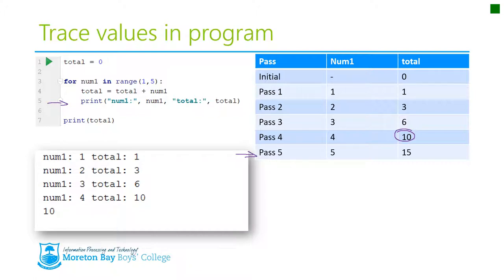So I can see that yep first pass it goes through, second pass it goes through, third pass it goes through, fourth pass and then it stops. So pass five doesn't stop.